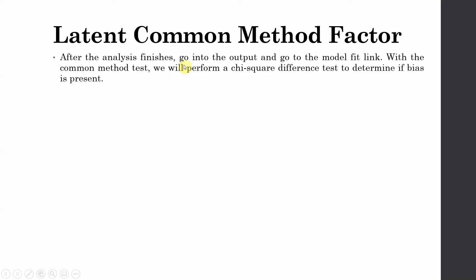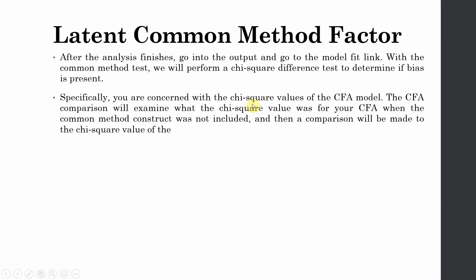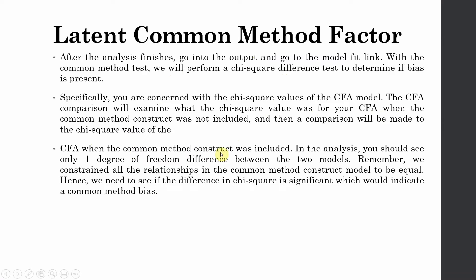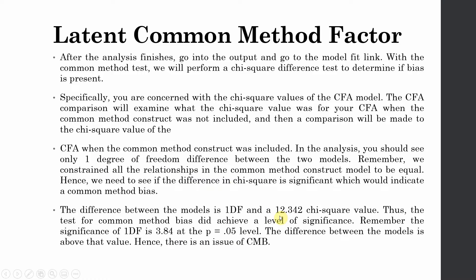We are interested in the chi-square difference between the original CFA and the CFA with the common method construct included. Because all relationships were constrained to be equal, there is only one degree of freedom difference between the two models. We need to see if this chi-square difference is significant, which would indicate common method bias. The difference of 12.342 far exceeds the critical value of 3.84 for one degree of freedom; hence, we do have an issue of common method bias.